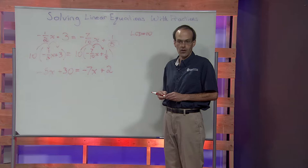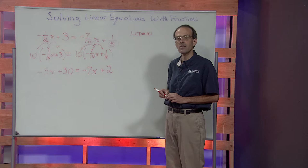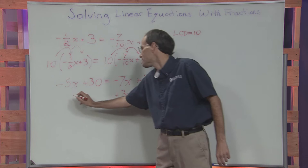All fractions have now been cleared from the problem, and we can proceed as always. We'll move variable terms to the left and constant terms to the right. To move the variable terms to the left, we'll add seven x to both sides of the equation.